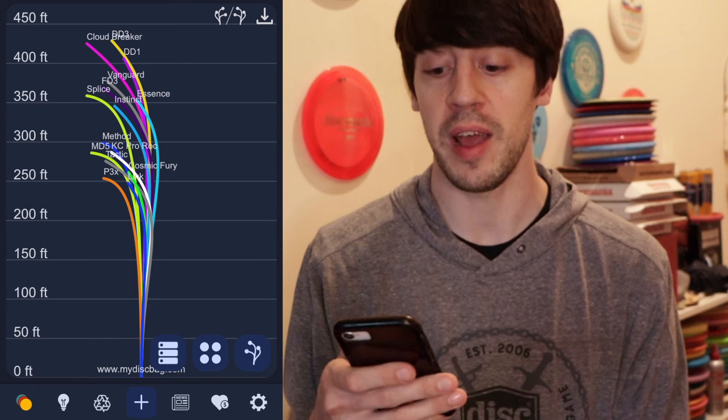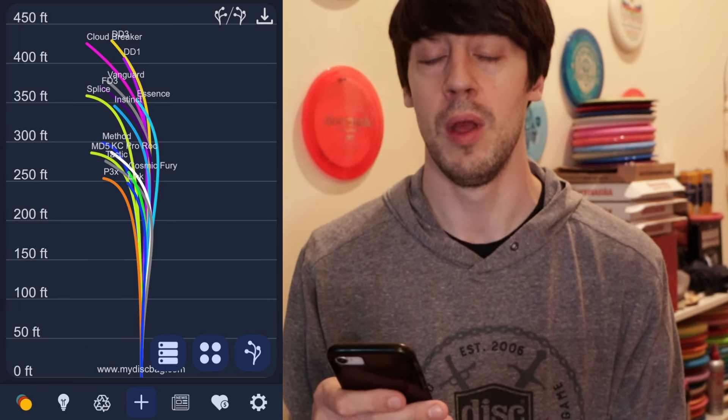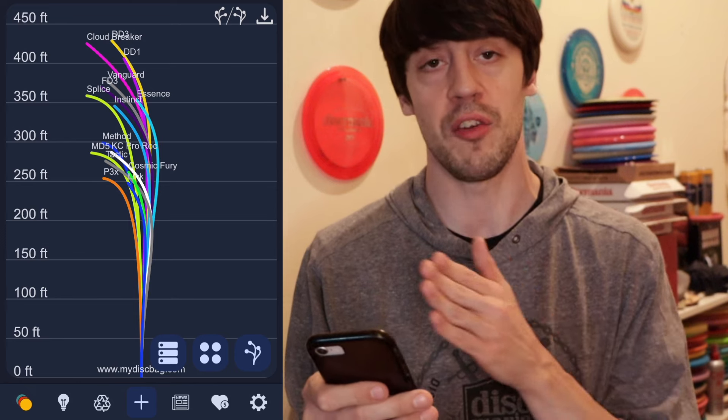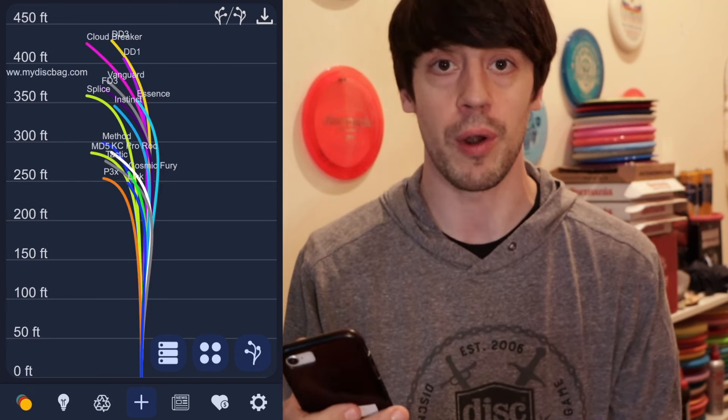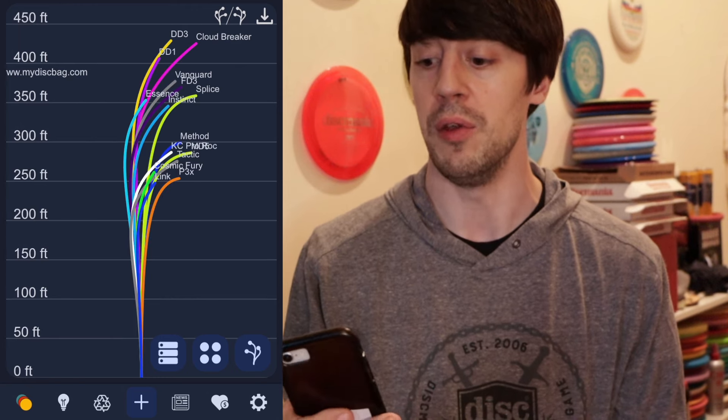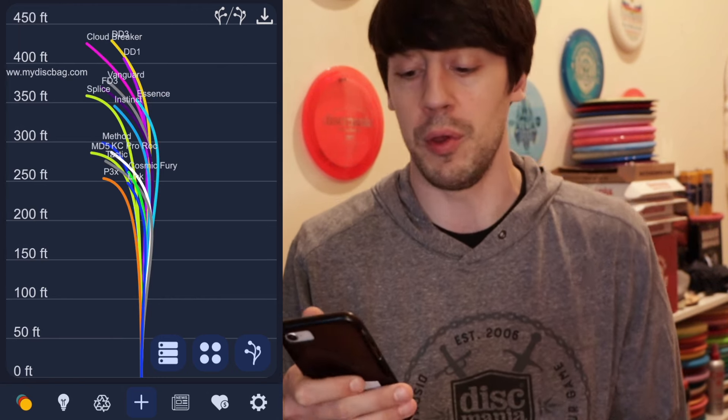...but then if you move over one more tab it gives you all the flight paths too. Average flight paths. So it gives you the distance, it kind of shows how it would fly, and then in the top right you can even flip it if you're a forehand thrower or if you're a lefty player. So you can flip the flight paths depending on what style of throw you have.